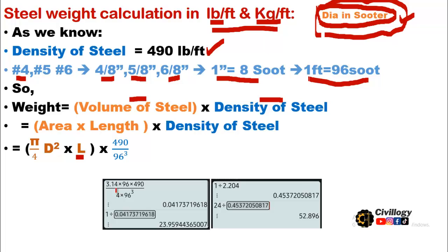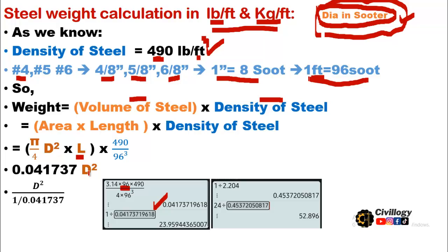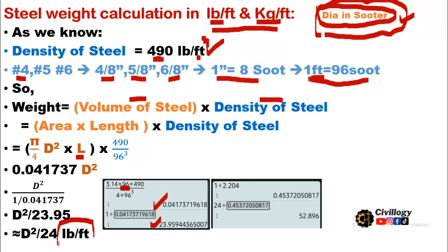Putting values: π (3.14) multiplied by 96 sutra (the unit length, 1 foot), divided by the density of steel (490 lb per cubic feet — note: cubic feet means 96 is cubed, i.e., 96³). We get 0.041 × D². After simplifying, the denominator becomes 23.95, approximately equal to 24, giving D²/24 lb per feet.